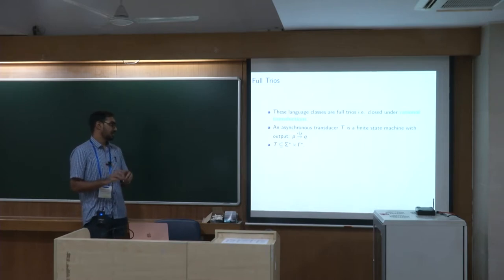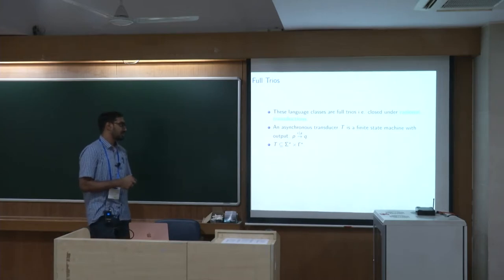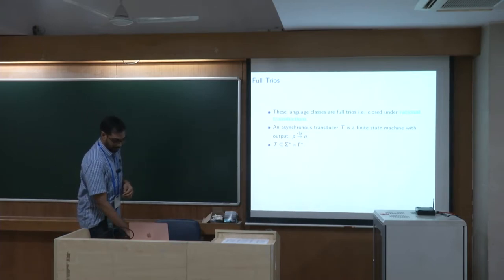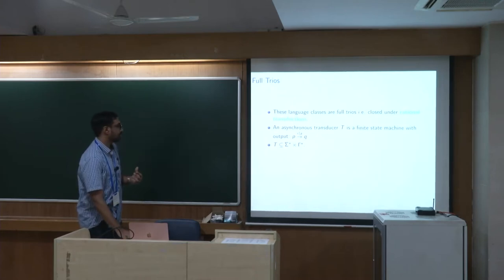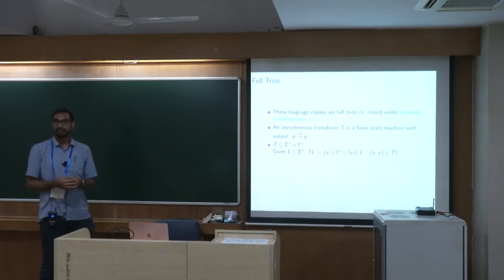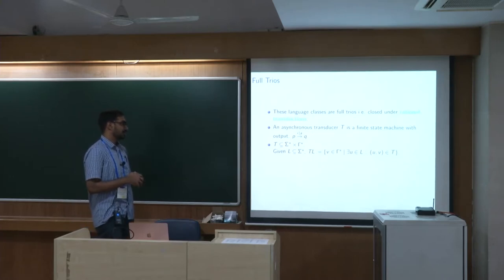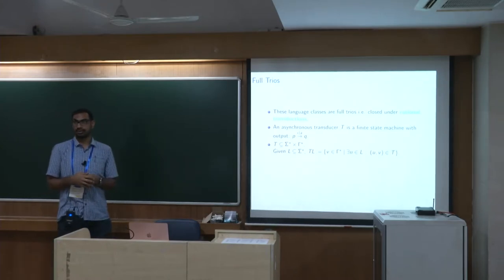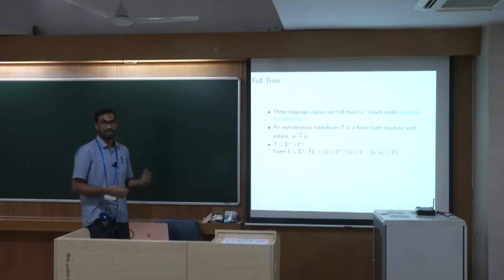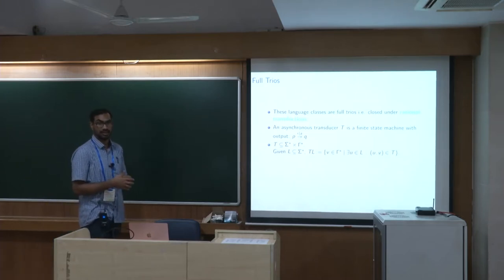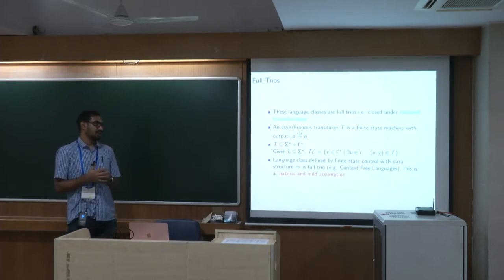The language of such a machine is a subset of Sigma-star cross Gamma-star, where Sigma is the input alphabet and Gamma is the output alphabet. Given a language L which is a subset of Sigma-star, the transduction T applied to L collects all words v such that there exists u in L with (u,v) belonging to T. Closure under transduction means applying different transducers to languages in the class still yields languages in the same class.